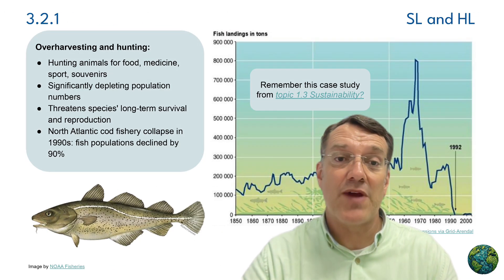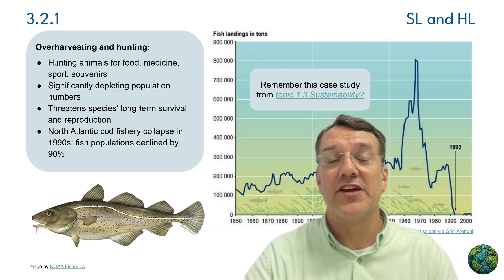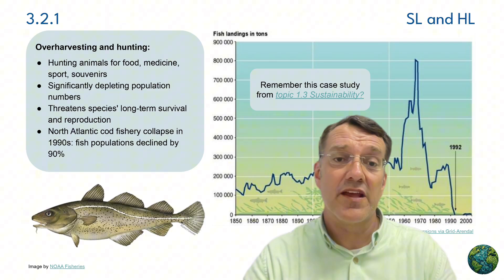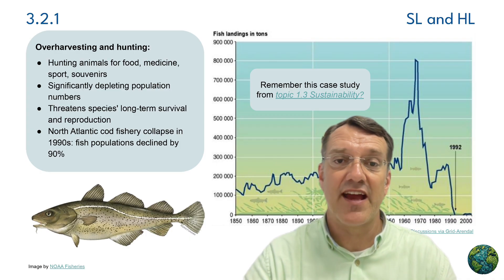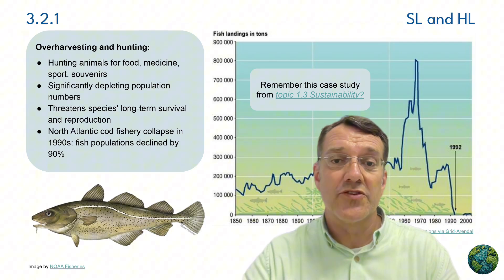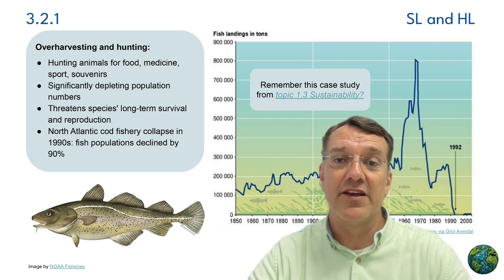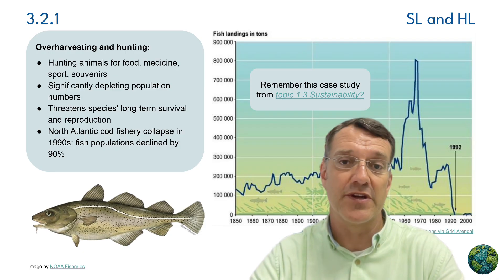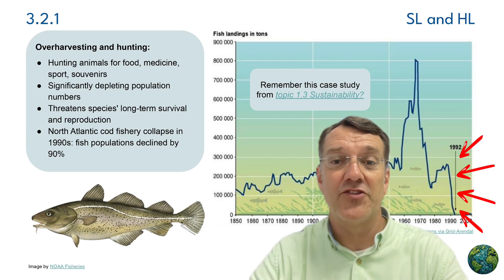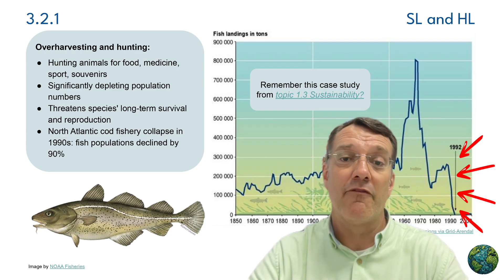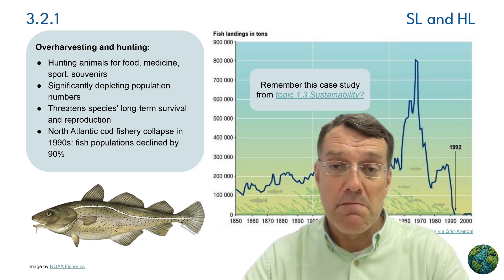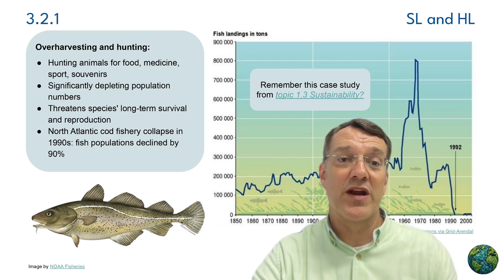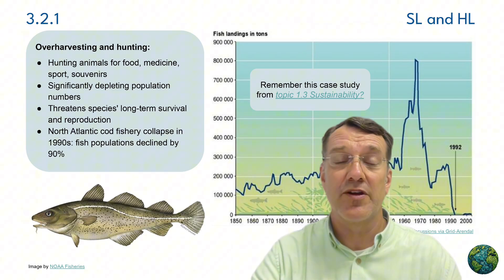Over-harvesting occurs when humans extract resources faster than natural populations can recover. A classic example we've already studied in ESS is the North Atlantic cod fishery collapse in the 1990s. For centuries these waters supported abundant cod populations, but industrial fishing technologies led to massive harvests beginning in the middle of the 20th century. By 1992, fish populations had declined by 90% from historical levels, demonstrating how quickly over-harvesting can devastate a population when it exceeds the species' reproductive capacity.